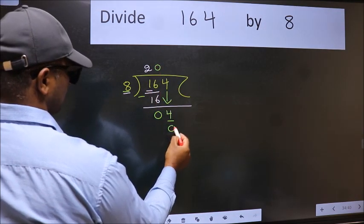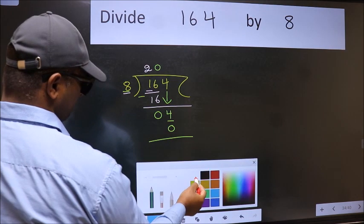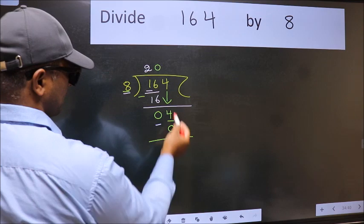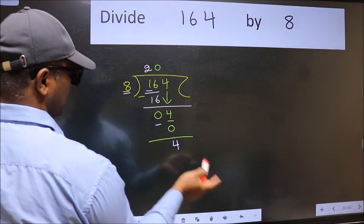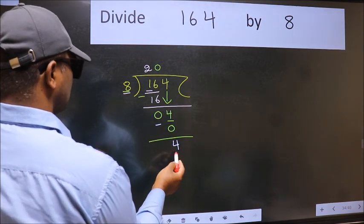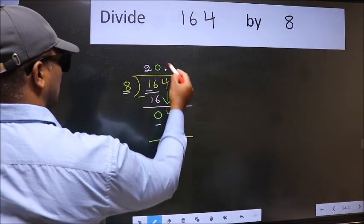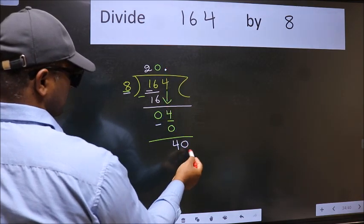So 8 times 0 is 0. Now we subtract and get 4. At this point, we did not bring any number down, and 4 is smaller than 8. So now we can put the decimal point and take 0, giving us 40.